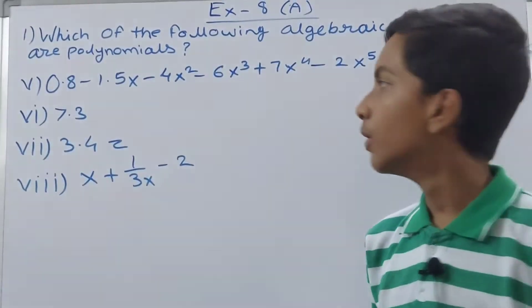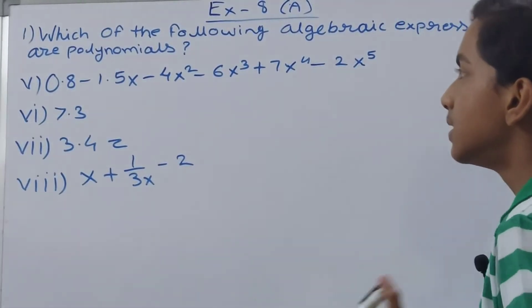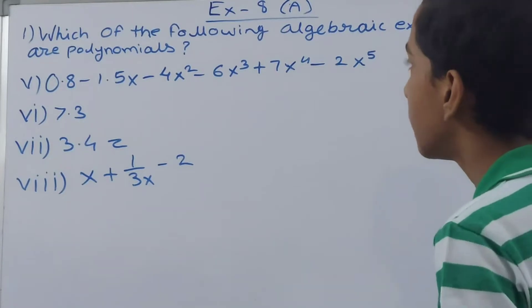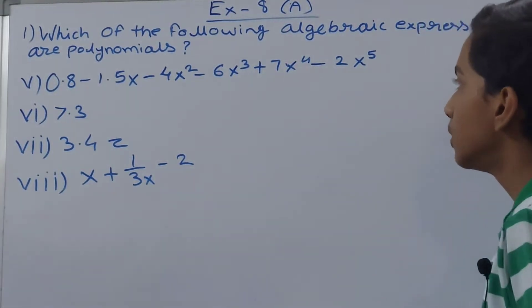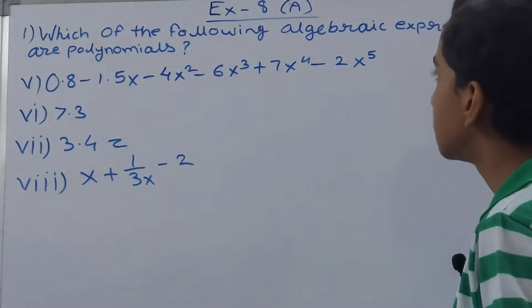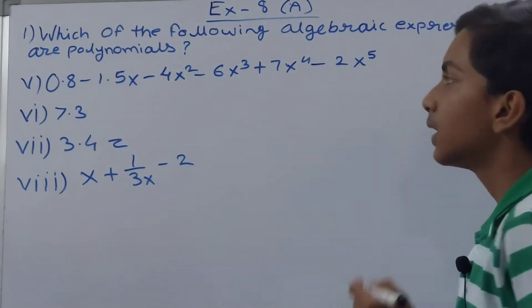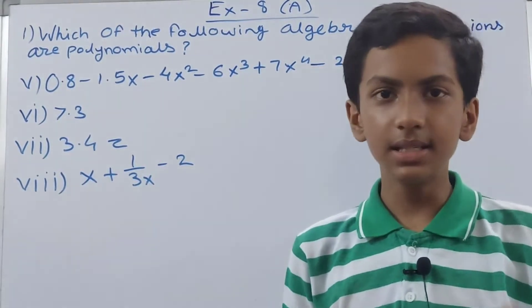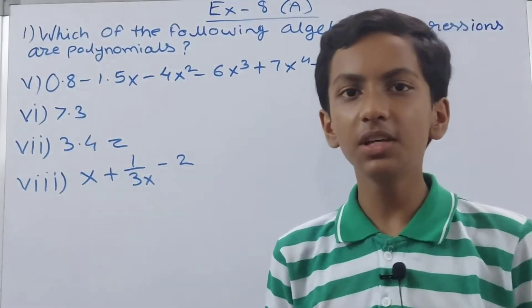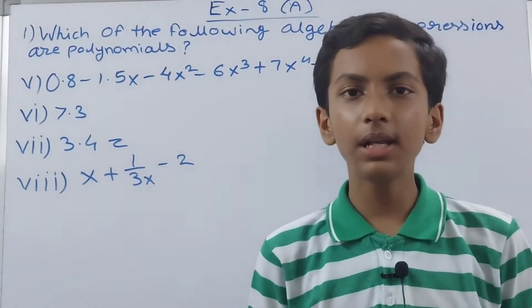Let us move on to the next parts. In the next part we have 0.8 minus 1.5x minus 4x to the power 2 minus 6x to the power 3 plus 7x to the power 4 minus 2x to the power 5. You can see no variable is being used as a denominator in any of the terms.